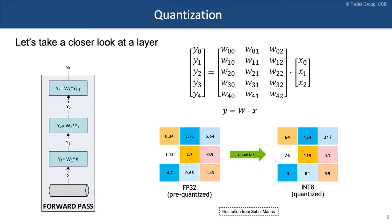If you look at a layer in the middle of the network, you're essentially performing operations such as matrix operations w times x. If w is represented with integer values, we can perform this multiplication using integer logic, which is more efficient.